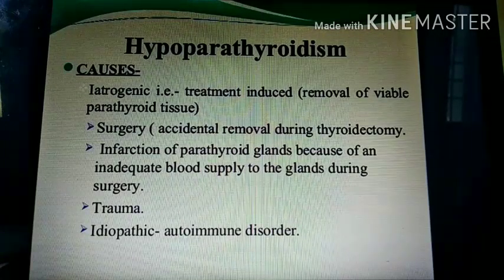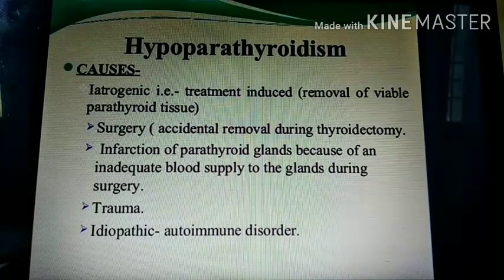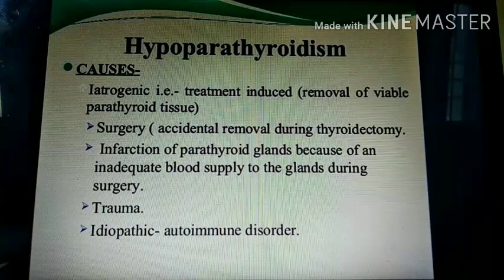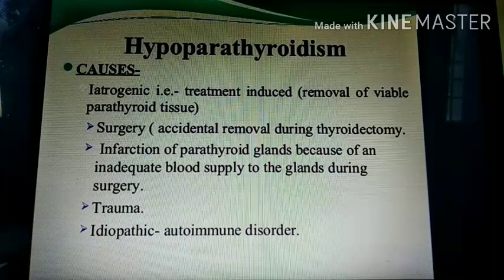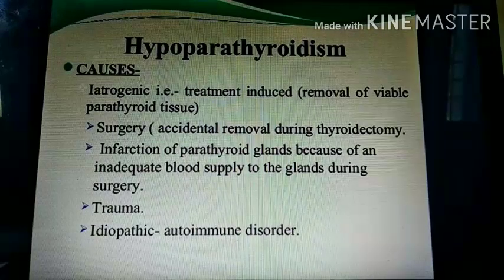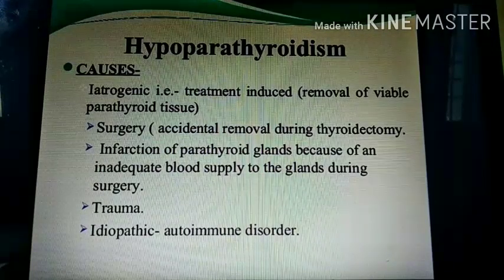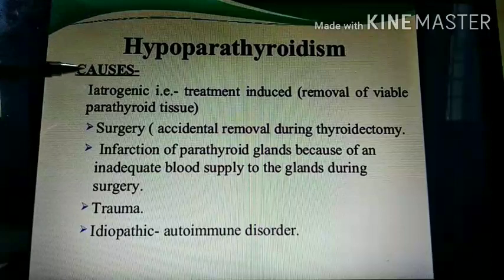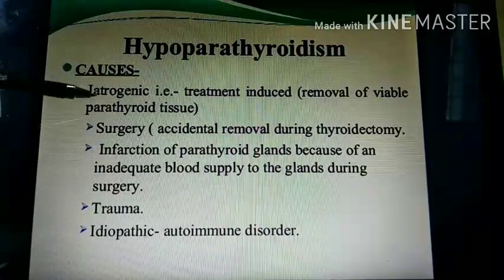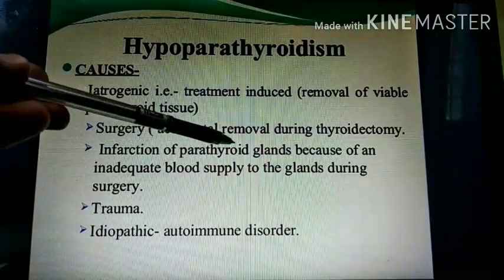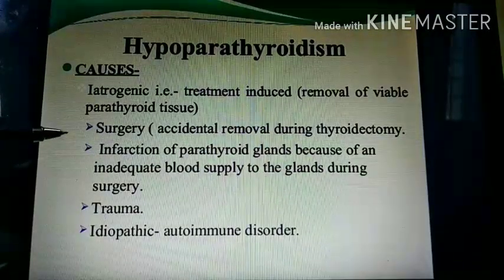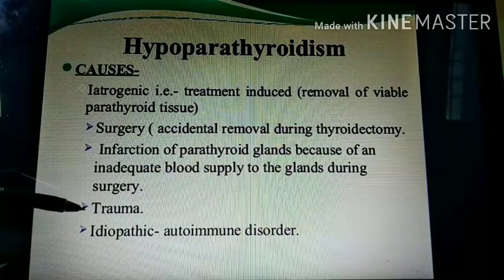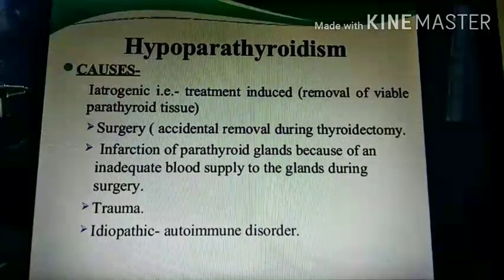Causes of hypoparathyroidism include iatrogenic causes — if parathyroid tissue is removed during treatment. Accidental removal during thyroidectomy, where parathyroid tissue is inadvertently removed, leads to decreased PTH. Infection of the parathyroid gland or poor blood supply can also decrease PTH. Trauma to the parathyroid gland, or idiopathic and autoimmune conditions where the immune system damages the parathyroid gland, can all decrease PTH synthesis.